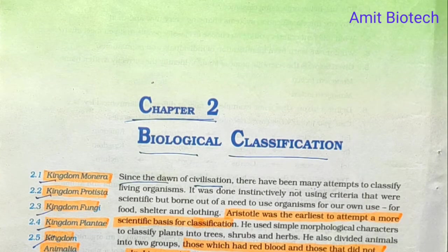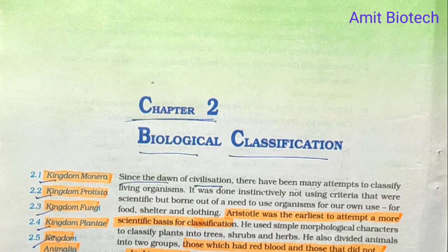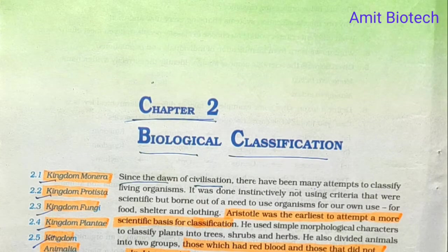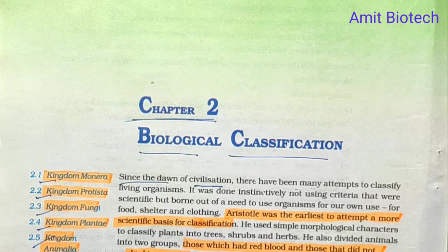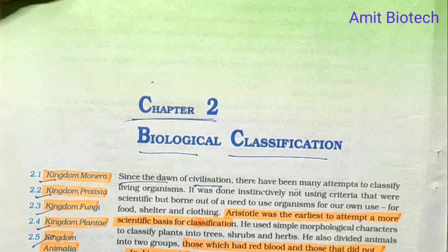A need was also felt for including, besides gross morphology, other criteria such as cell structure, nature of cell wall, mode of nutrition, habitat, method of reproduction, and evolutionary relationships. The plant and animal kingdoms have been constant across different systems, but the understanding of what groups to include under these kingdoms has been changing over time.